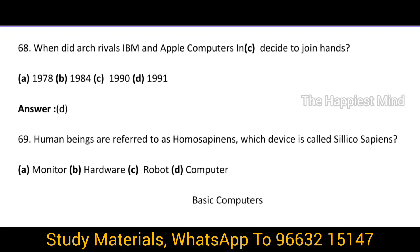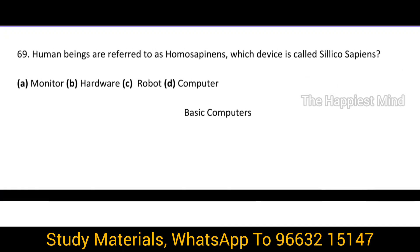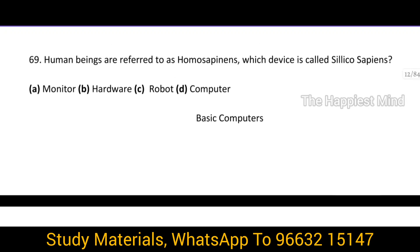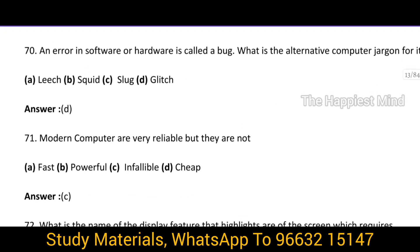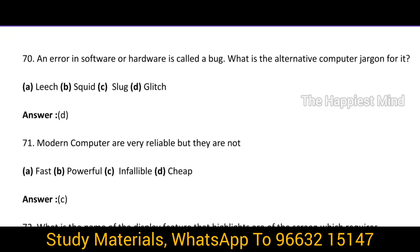Question 68: When did arch rivals IBM and Apple computers decide to join hands? Option D, 1991. In the year 1991, IBM and Apple computers decided to join hands and work together. Question 69: Human beings are referred to as Homo sapiens — which device is called Silico sapiens? Answer option D, the computer. Question 70: An error in software or hardware is called a bug. What is the alternative computer jargon for it? It is option D, glitch. The alternative computer jargon for the word bug is glitch.